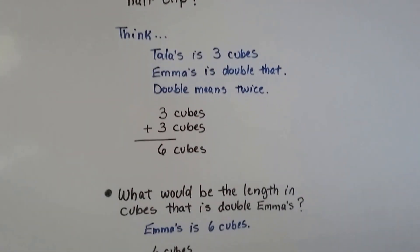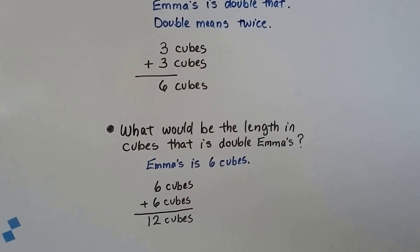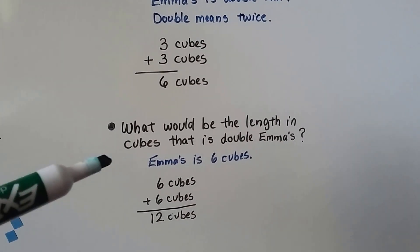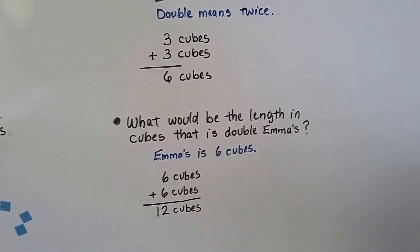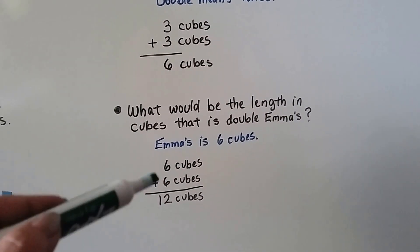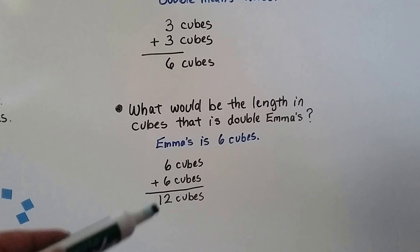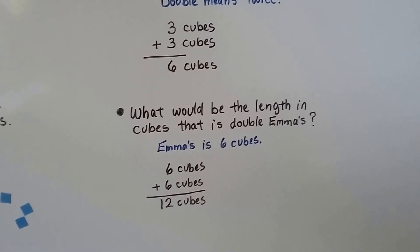It's bigger, isn't it? What would the length in cubes be if it was double Emma's? Emma's was six cubes so we would just double six cubes. Six cubes plus six cubes. And that would give us 12 cubes.